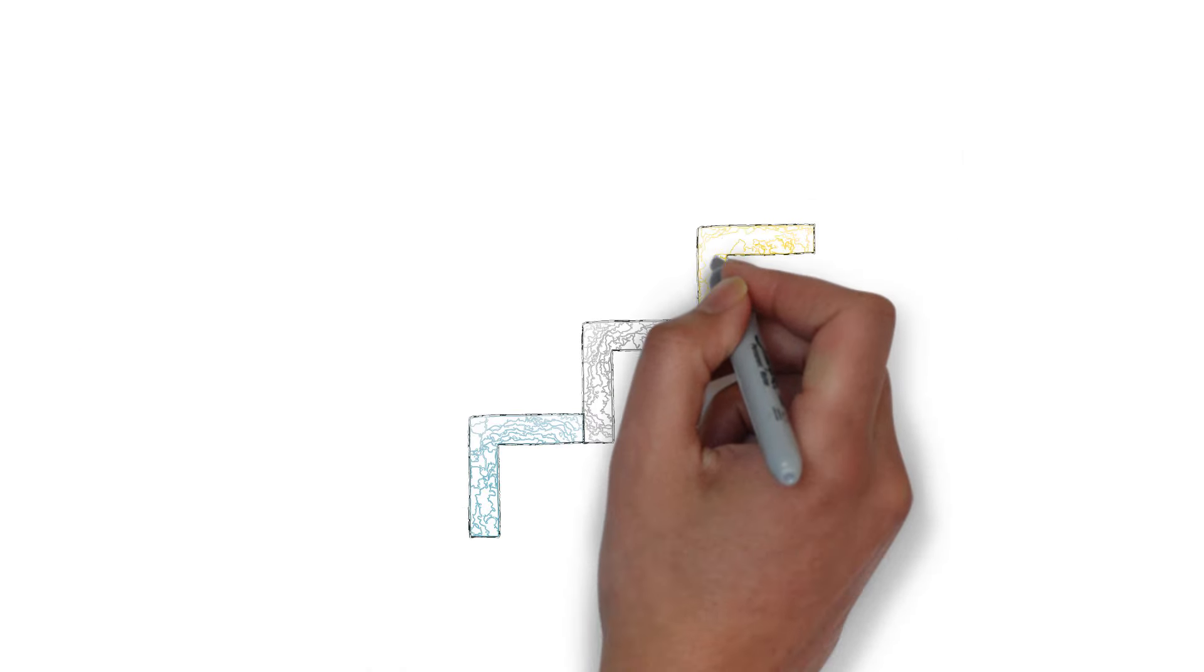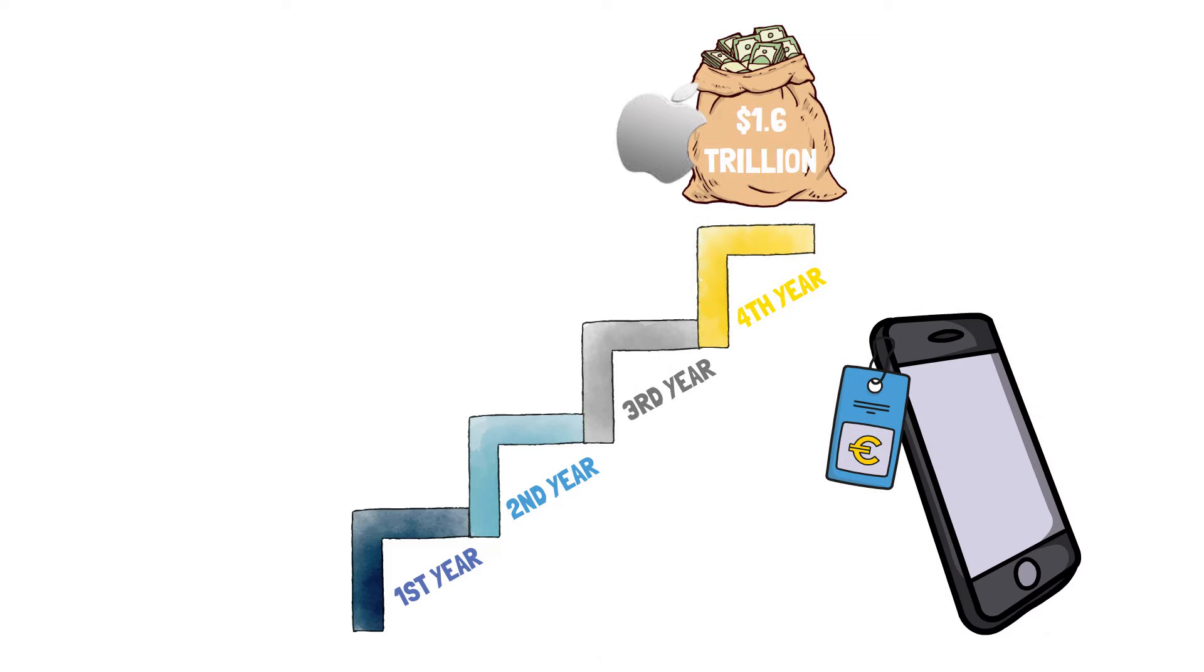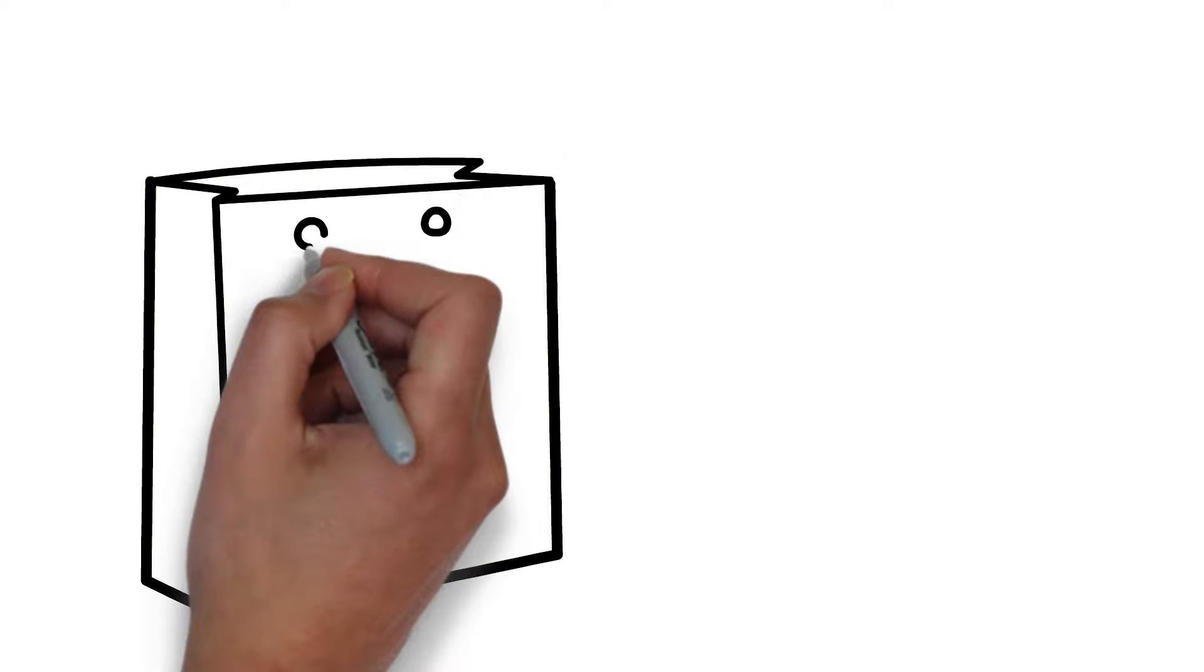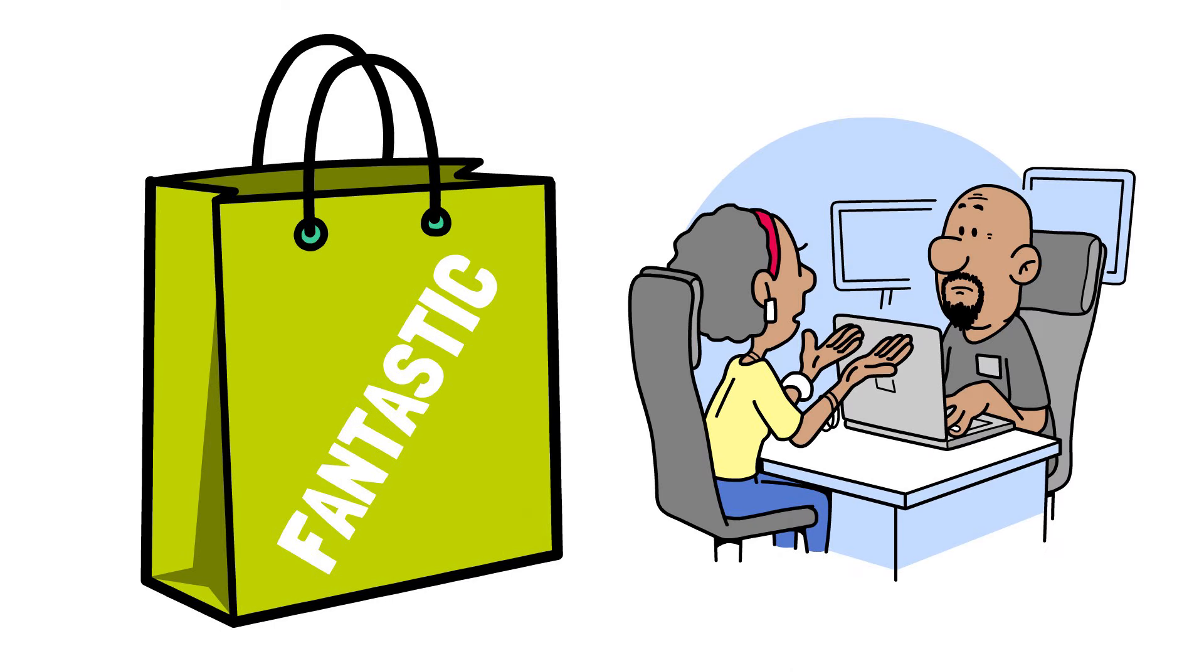Over the years, Apple has made more than $1.6 trillion from iPhone sales alone. The more loops you add to the BML Cycle, the more likely you are to create a fantastic product with a more sustainable business plan.